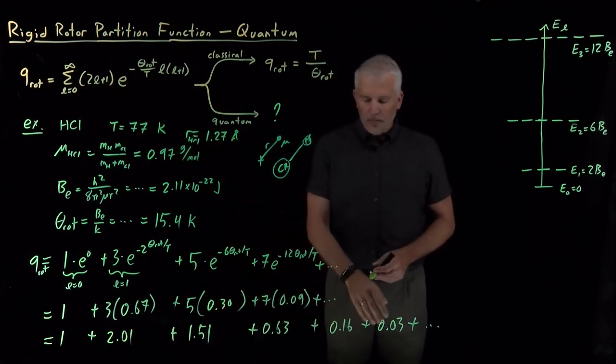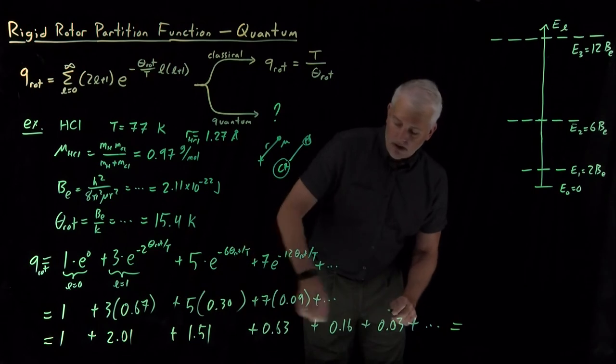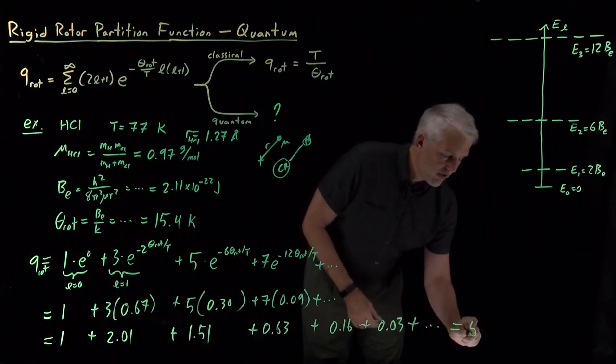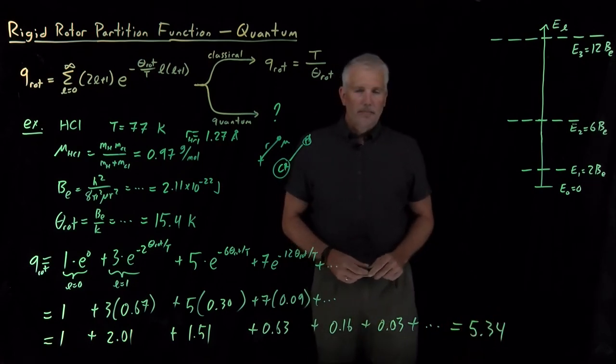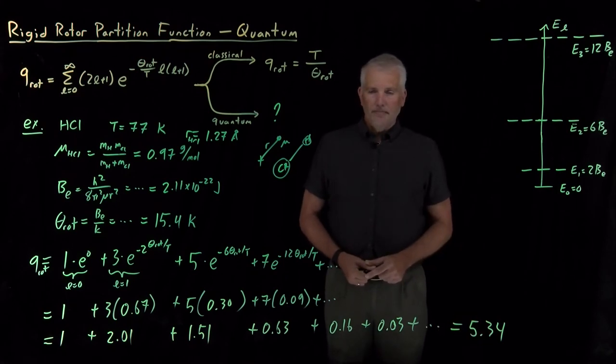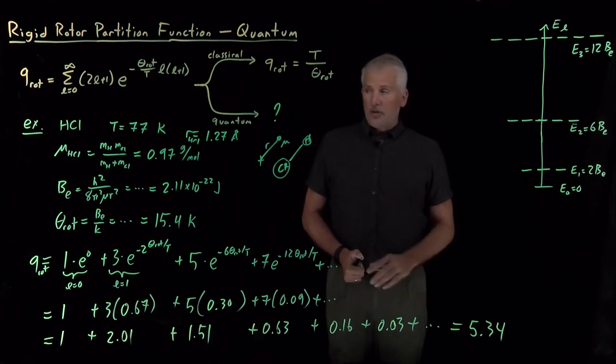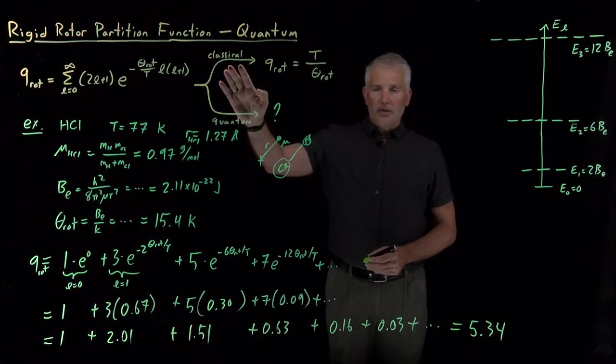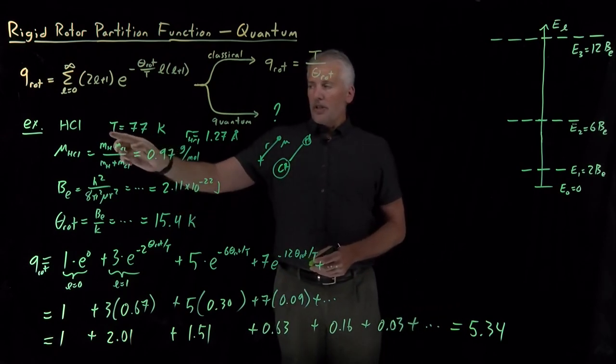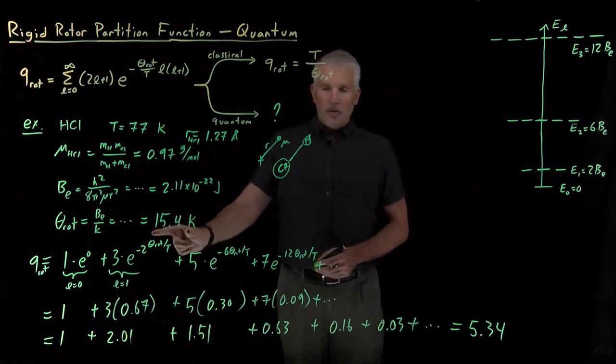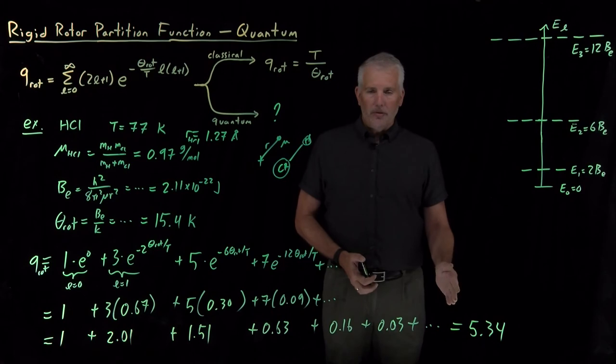And now it does indeed look like we won't have to include too many more of these terms before they're so small that they're not actually contributing anything. So the good news is this infinite sum is infinite, but most of the terms are so small that we don't need to worry about them. And only the first few terms in this sum are important enough to include. So if we calculate the first 10 or so of these terms, that's all we need, and it turns out that the partition function works out to be about 5.3. And we can get that without doing an infinite number of terms, but just a handful of them. So that's the good news. In fact, that turns out to be typical. When we're not under classical conditions, when we're under quantum mechanical conditions.